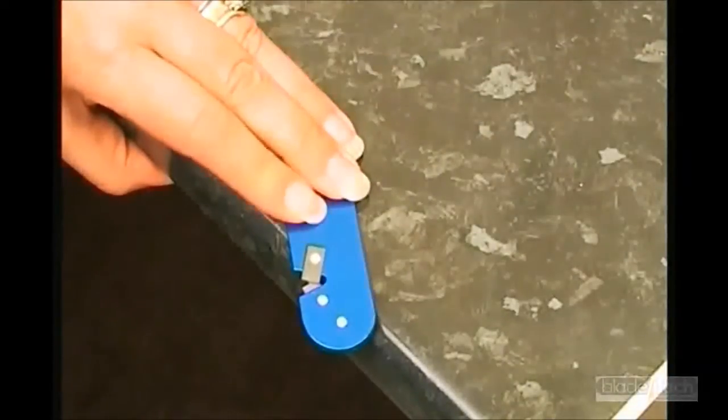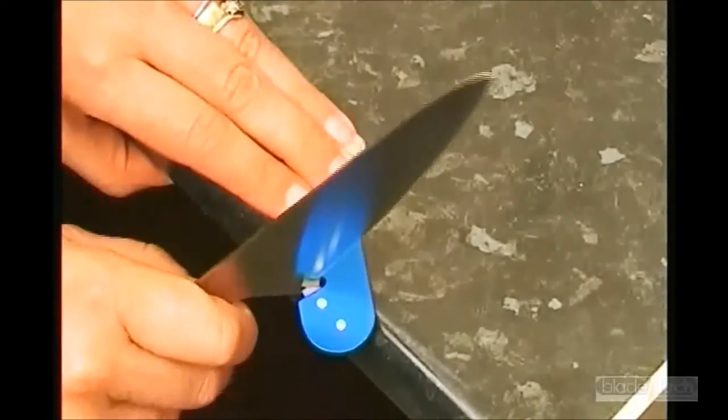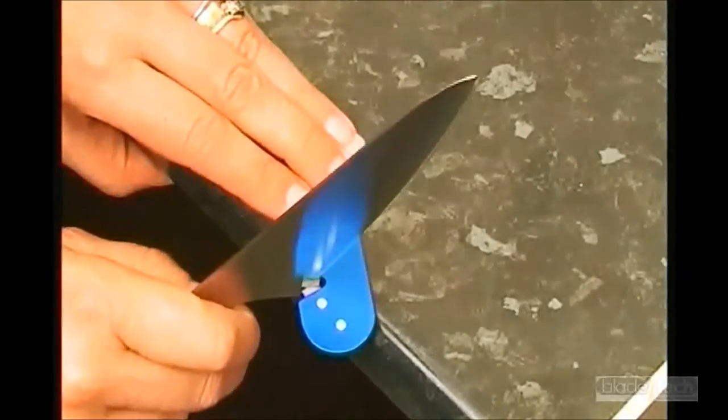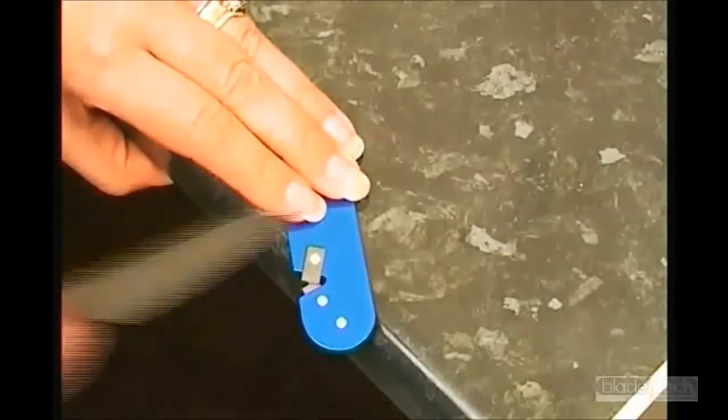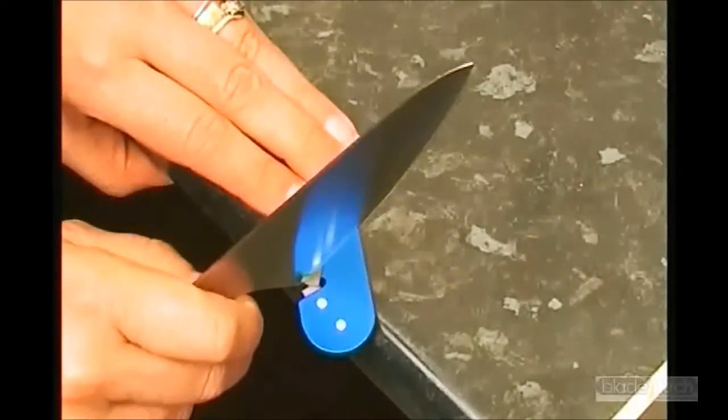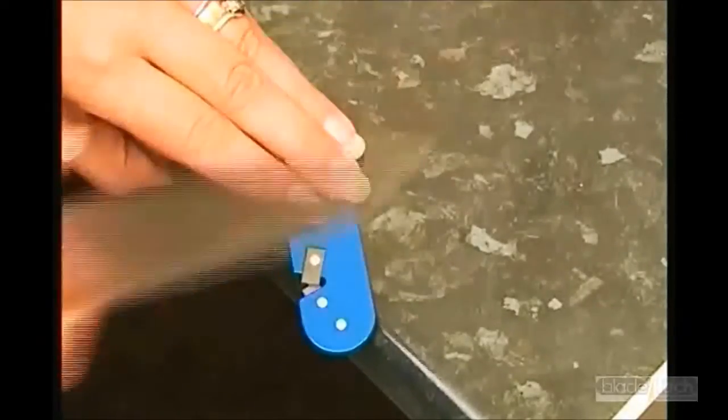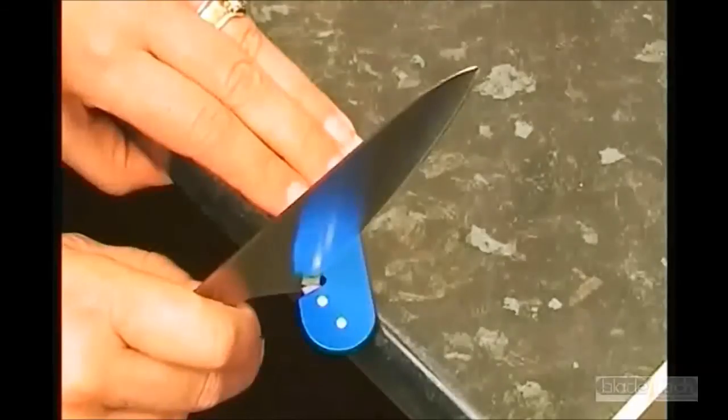Sharpening kitchen knives with the Bladetech couldn't be easier. Simply lay the Bladetech down overhanging the edge of the work surface. Then lightly draw the knife down through the center of the wedge. This should be done several times with light even pressure. Test the edge, and if necessary repeat again with light pressure.